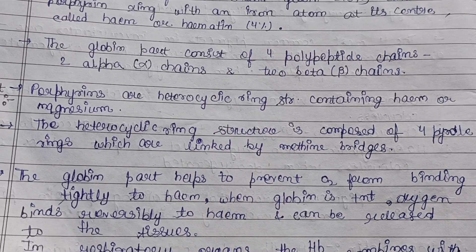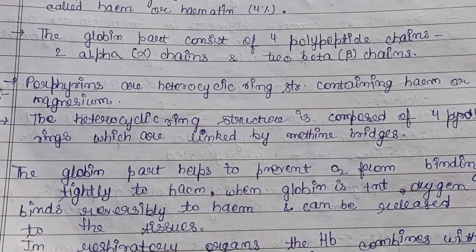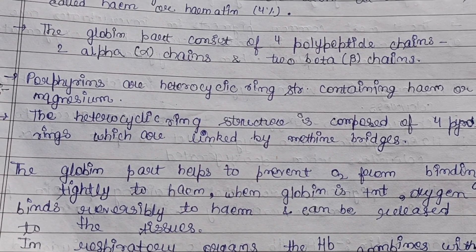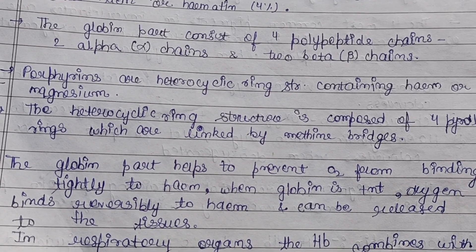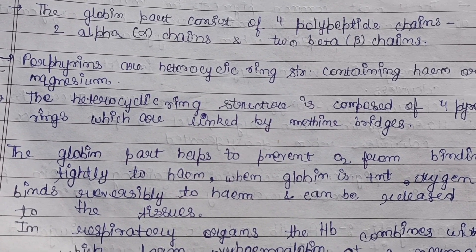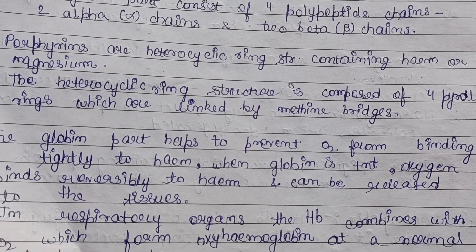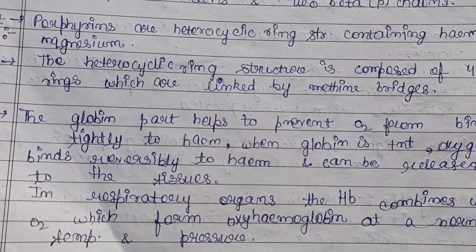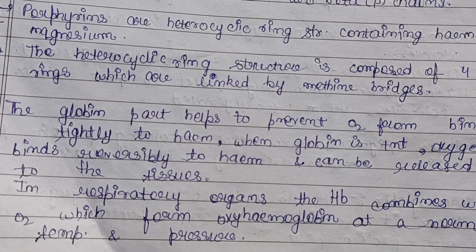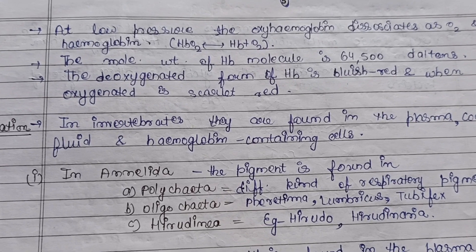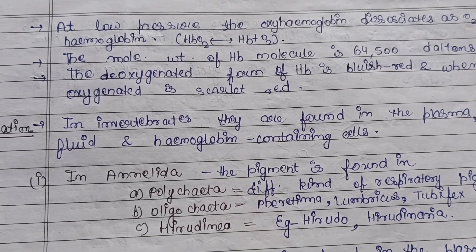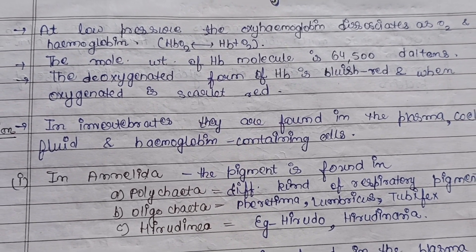When globin is present, oxygen binds reversibly to heme — the iron-containing porphyrin ring — allowing oxygen to be released to tissues for supply. In respiratory organs, hemoglobin combines with oxygen to form oxyhemoglobin under normal temperature and pressure. At low pressure, oxyhemoglobin dissociates: HbO₂ → Hb + O₂. This is a reversible process.